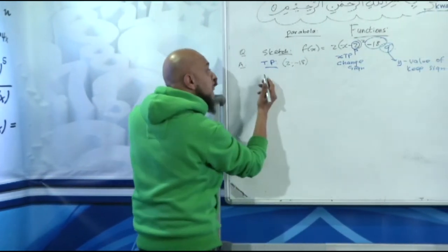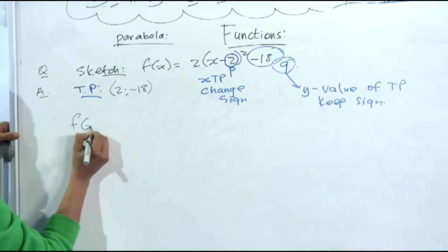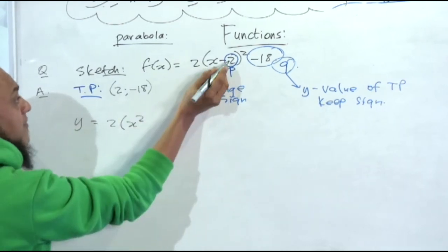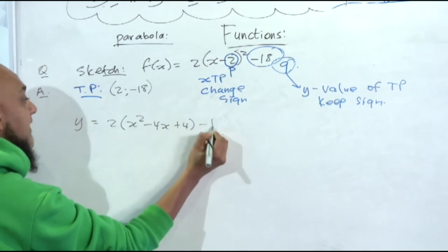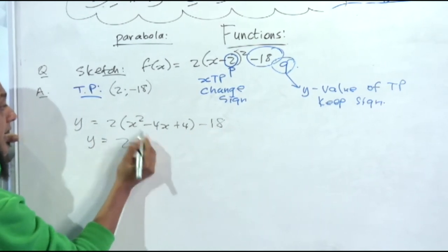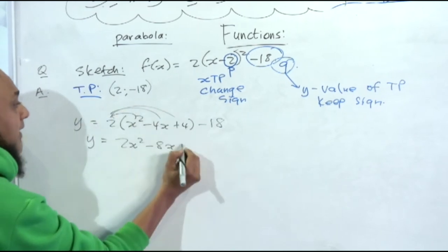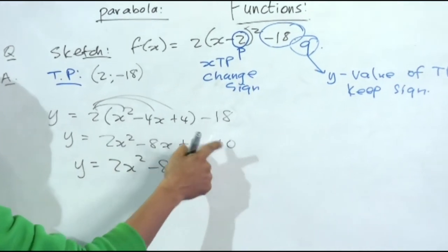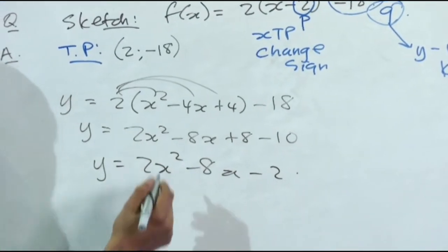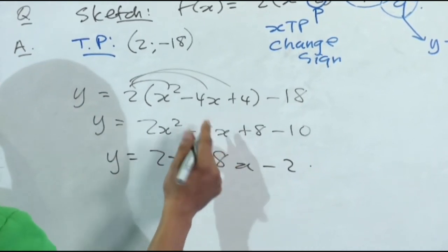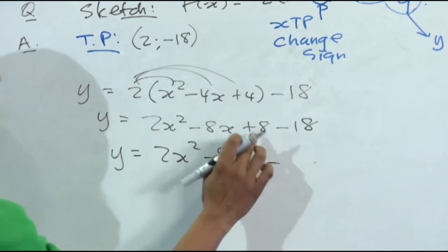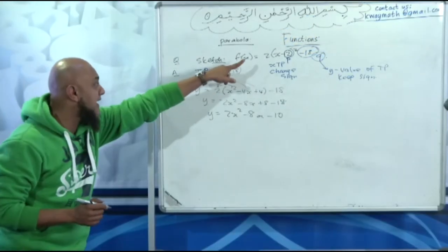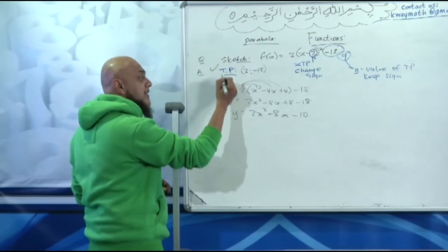Step number two: remove the brackets. So y = 2(x − 2)² − 18 expands to y = 2(x² − 4x + 4) − 18, which gives y = 2x² − 8x + 8 − 18, so y = 2x² − 8x − 10. We've now got the equation in trinomial form.